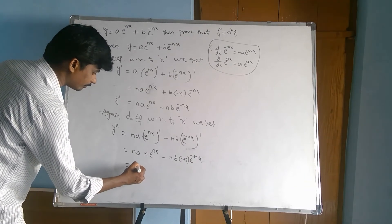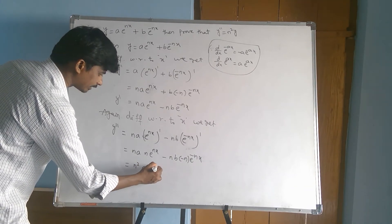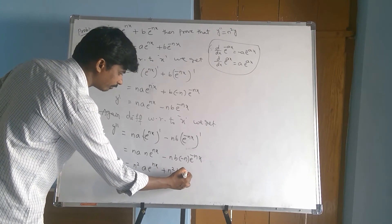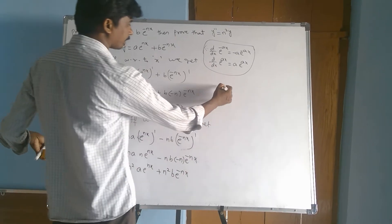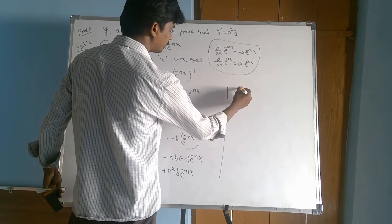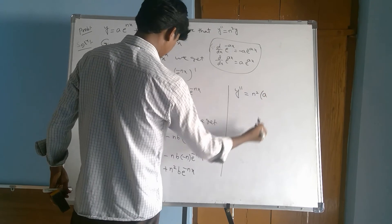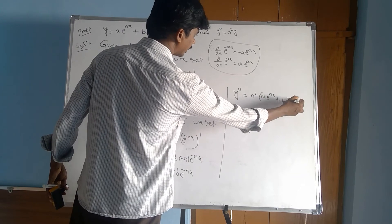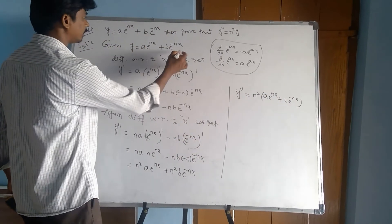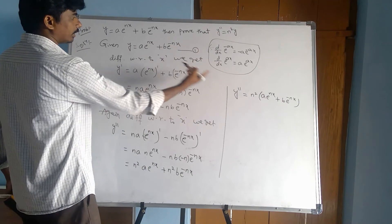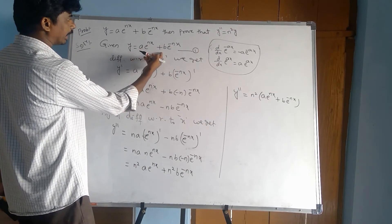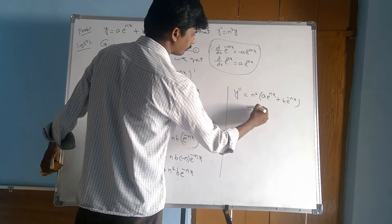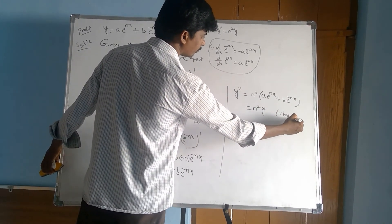See here n into n gives n square a e power nx, and minus minus gives plus, so n square into b e power minus nx. n square is common, so y double dash equals n square into a e power nx plus b into e power minus nx. Since from equation 1, a into e power nx plus b into e power minus nx is y, therefore y double dash equals n square into y.